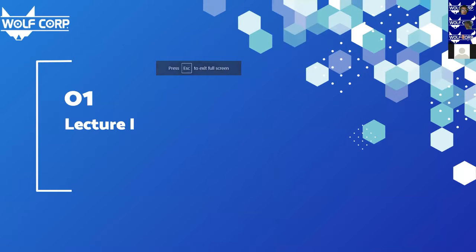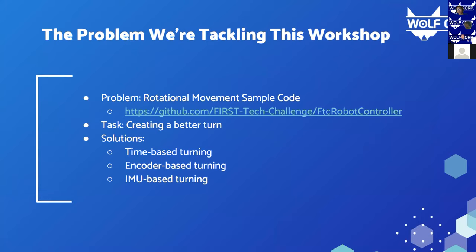Moving on to the first part of our lecture, we'll be talking about the conceptual foundation of a gyro and the solutions we have to turning. The problem we're trying to tackle today is creating precise rotational movement, and we'll be improving off what the FTC robot controller GitHub repository already provides. When you're trying to turn, there are three approaches: time, encoder, and IMU.